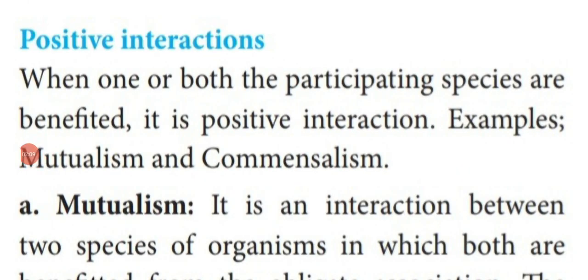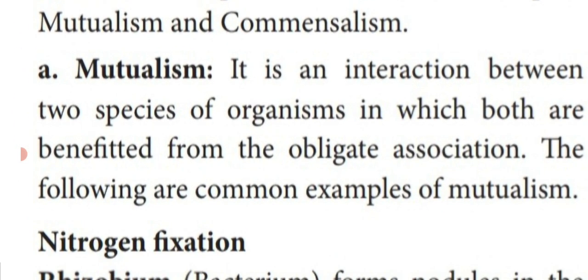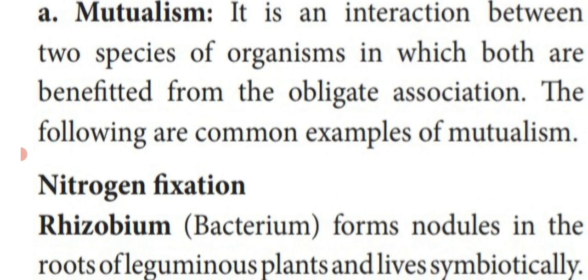First, we are going to see positive interaction. The interaction between plants and animals which shows a positive nature means both organisms are benefited — plant is benefited and animals are also benefited. That type of interaction is called positive interaction. This positive interaction consists of two types: one is mutualism and another one is commensalism. First, we are going to see mutualism. It is a two mark question, it will come for three marks as well — write short notes on mutualism with example. Sometimes it will come as a five mark question.